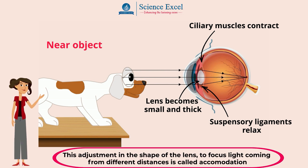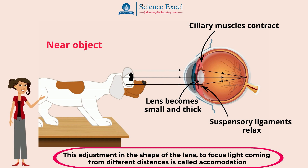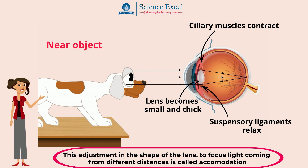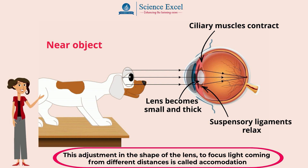This adjustment in the shape of the lens to focus light coming from different distances is called accommodation.